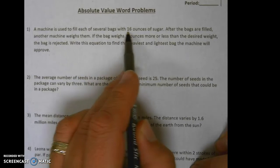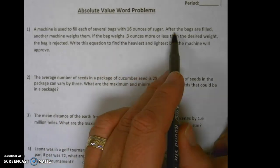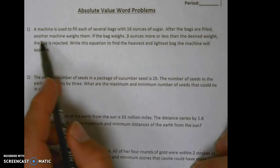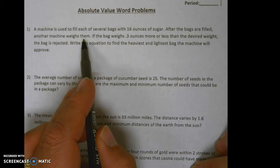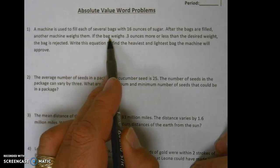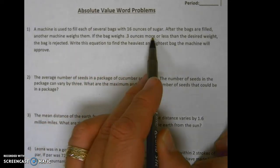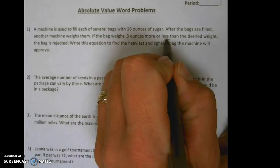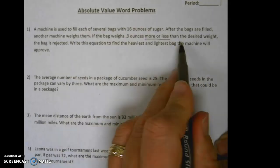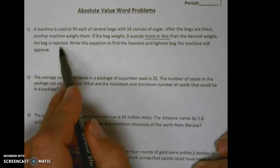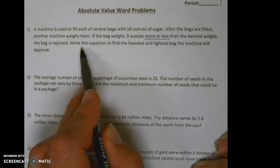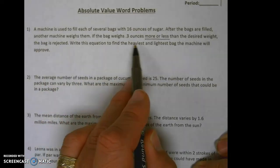After the bags are filled, another machine weighs them. If the bag weighs 0.3 ounces more or less than the desired weight, the bag is rejected. Write this equation to find the heaviest and lightest bag the machine will approve.